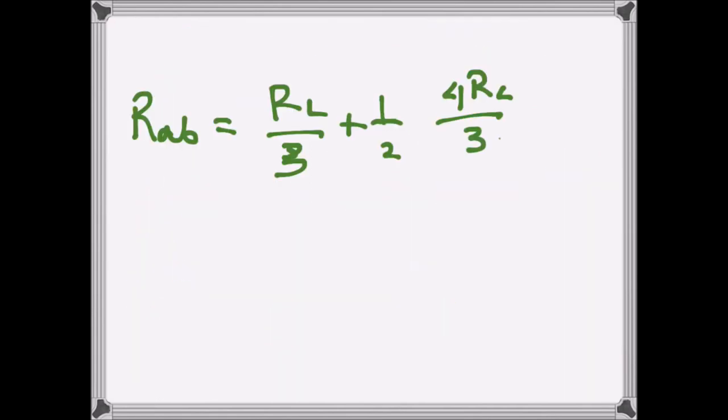So that's R_L over 3 plus this is 2R_L over 3. And then when we add them, it becomes just R_L. One third plus two third is equal to R_L.